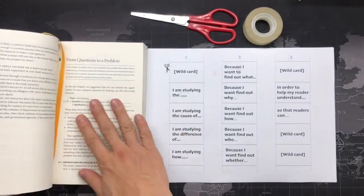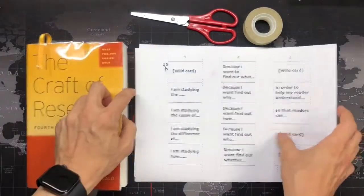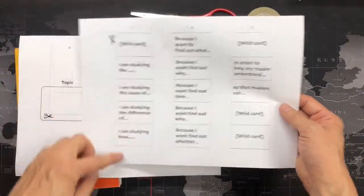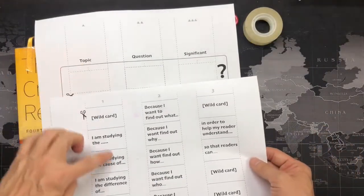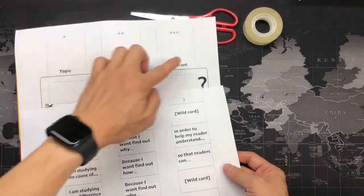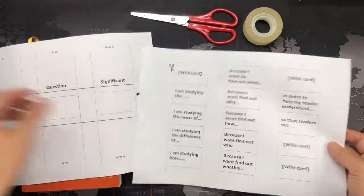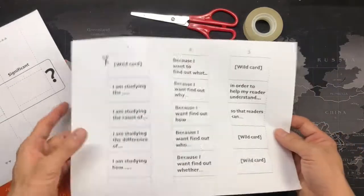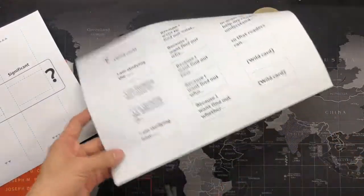So I'm going to make a cue by painting two sides of the paper here. This one is topic, this one is question, and this one is significant. So the way we do it is really simple by cutting out this tool.